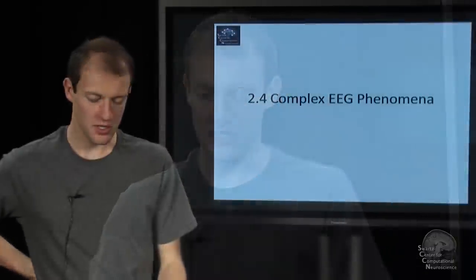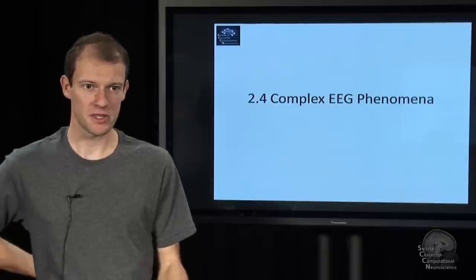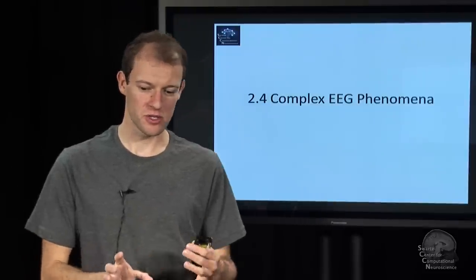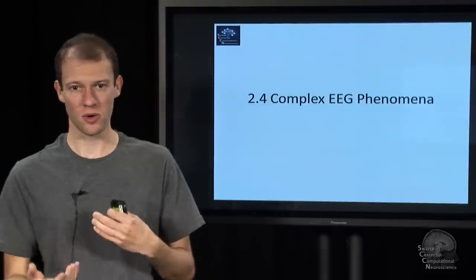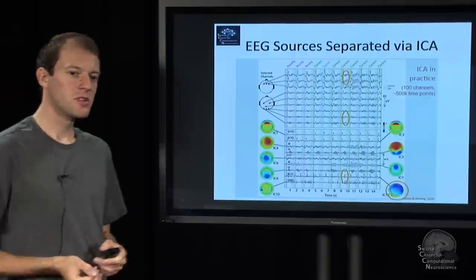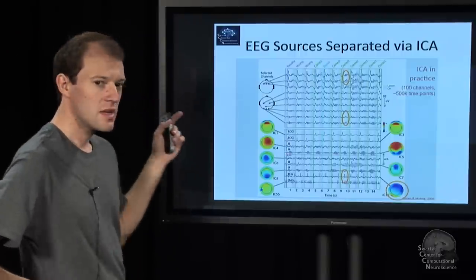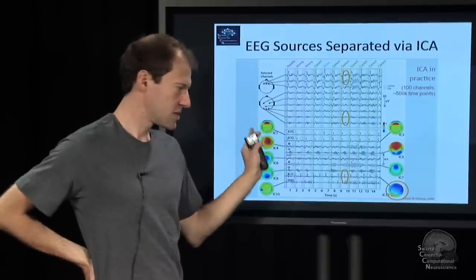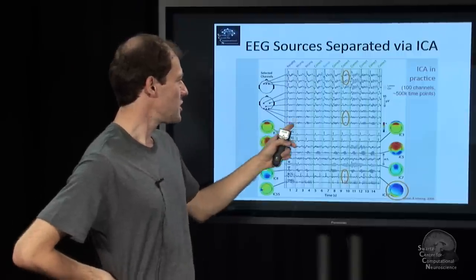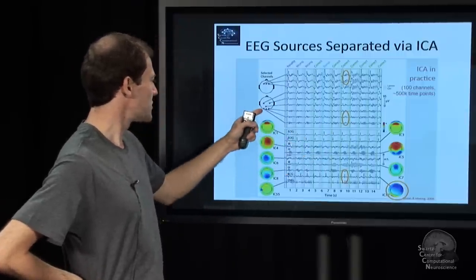The next part and next module in the EEG Basics lecture talks about complex EEG phenomena. These are phenomena that consist of multiple parts co-occurring. Here is a pretty interesting little plot from EEG of a person—it's a single 10-second slice.